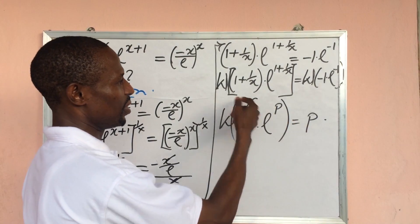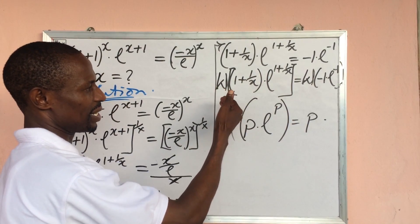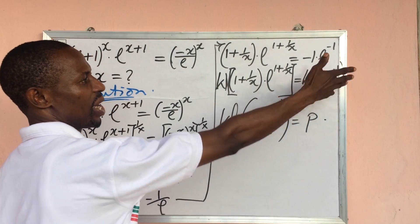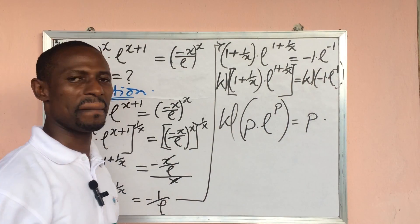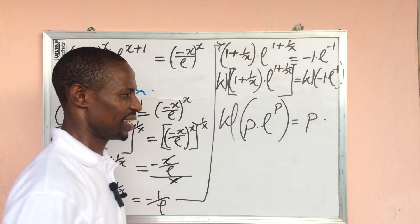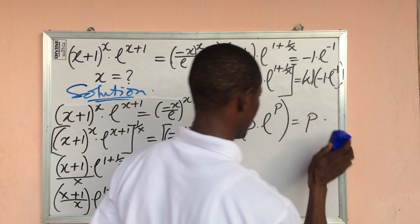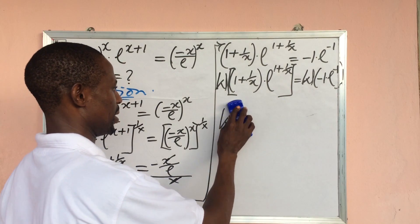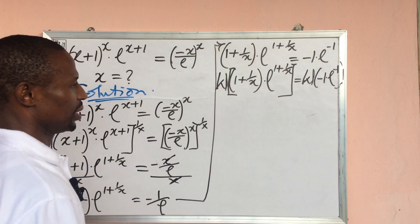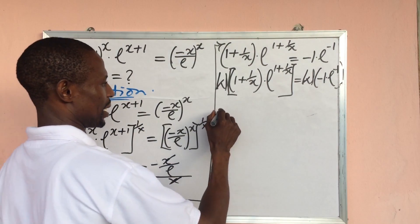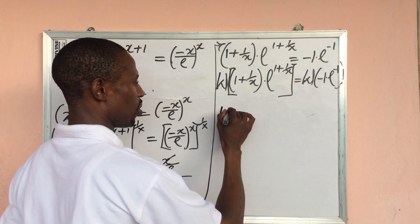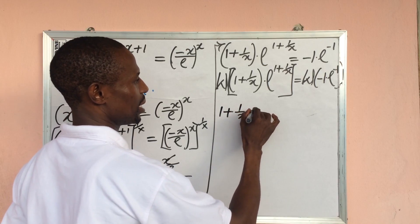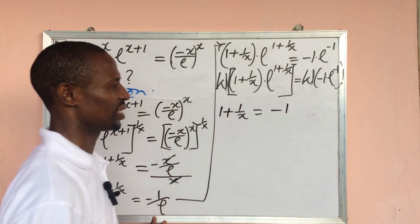According to the Lambert W law, the left-hand side gives us 1 plus 1 over x, and the right-hand side gives us minus 1. So we have: 1 plus 1 over x equal to minus 1.